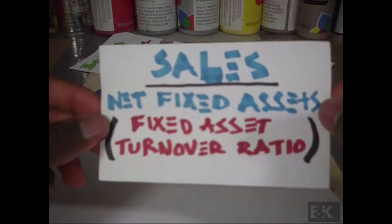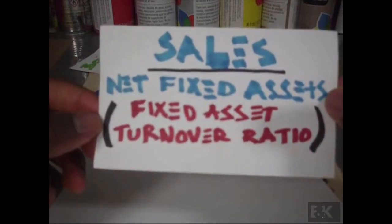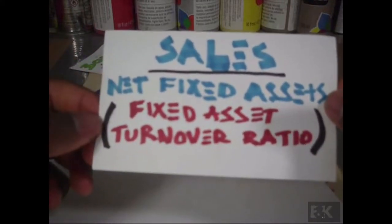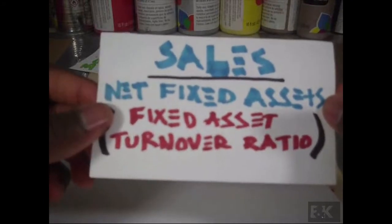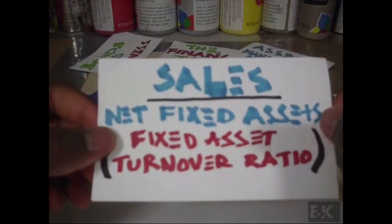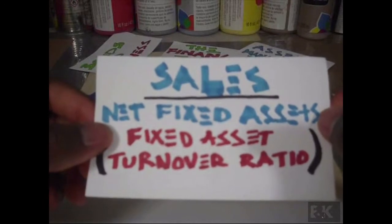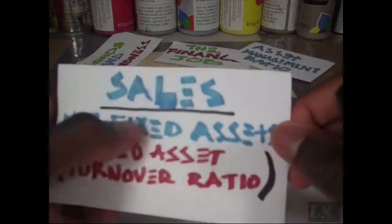If we decide that it's going to be a slow month for us, so let's only make a hundred pairs of shoes even though we've been making a thousand pairs of shoes every month, the size of our property, plant, and equipment is not going to change, right? It's fixed.